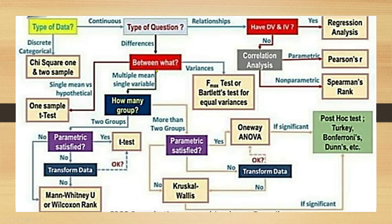If we seek relationships, we have two options. Regression analysis involves one independent variable and one dependent variable; its non-parametric counterpart is logistic regression. On the other hand, there is correlation analysis: its non-parametric counterpart is Spearman's rho, and its parametric version is Pearson's R.